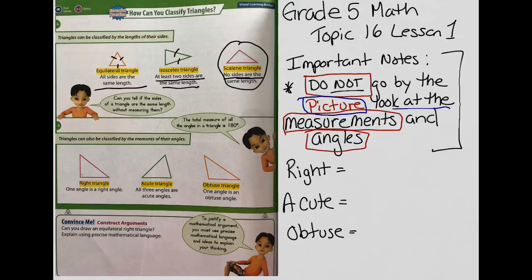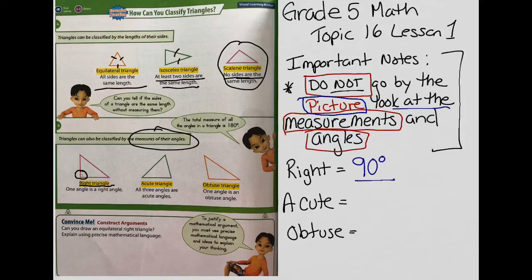There's also another way to classify triangles, and that's by the measure of their angles. When we look at the triangles, if we see this little square inside a triangle, that means right away that we know it's a right angle. A right angle is always going to be 90 degrees — it won't be more, it won't be less. It is always 90 degrees when you see that little square.